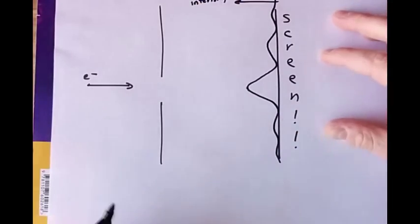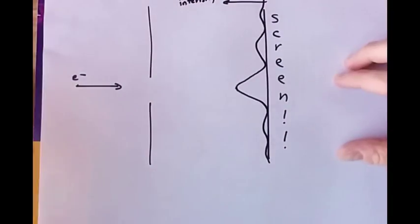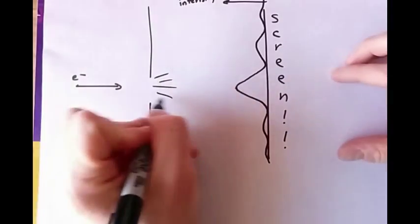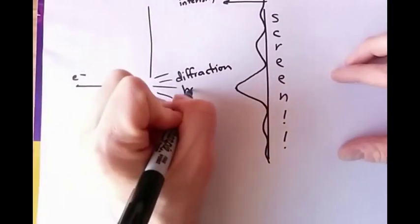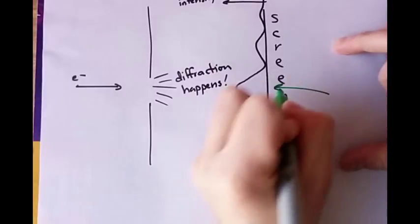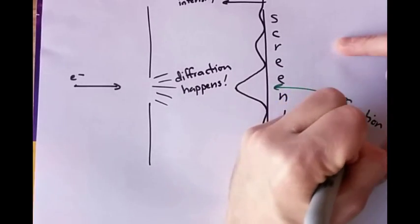Electrons, we think of them as little particles, little bullets. How can they diffract? Diffraction is something that waves do. Electrons are not waves. How can they diffract?